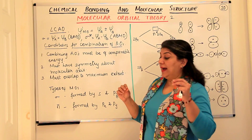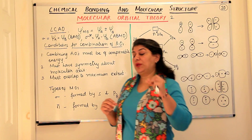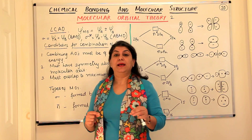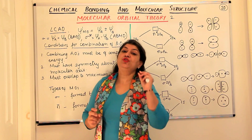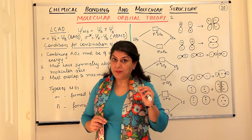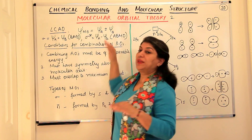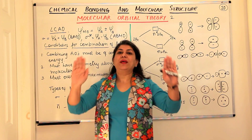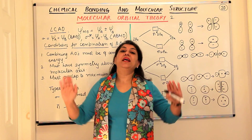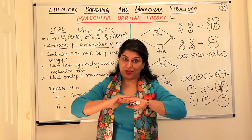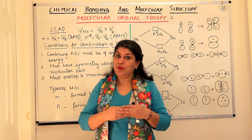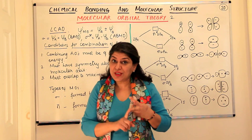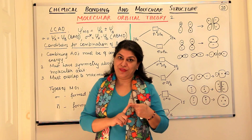I told you in the previous video that whenever two atomic orbitals combine, they result in the formation of two molecular orbitals. And if we assume that these are waves, imagine that when waves come together and combine, they are interfering with each other. And there are two types of interferences: a constructive interference and a destructive interference.